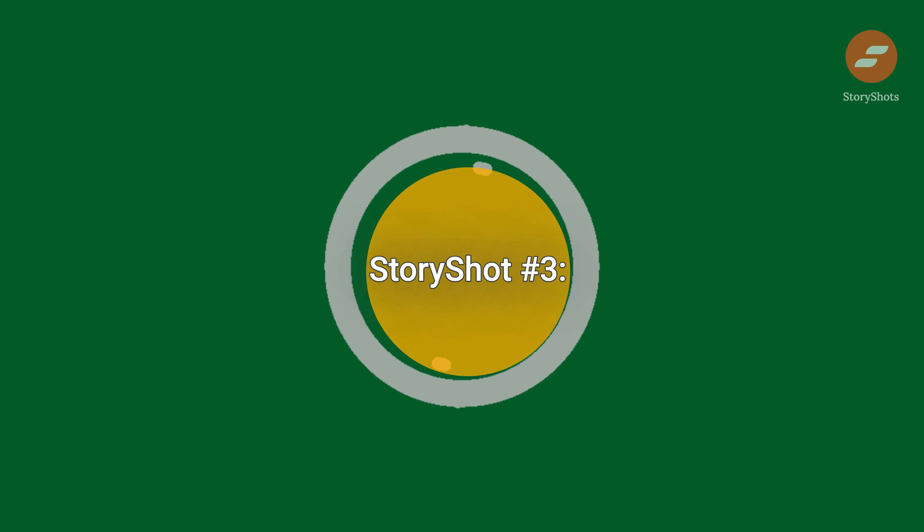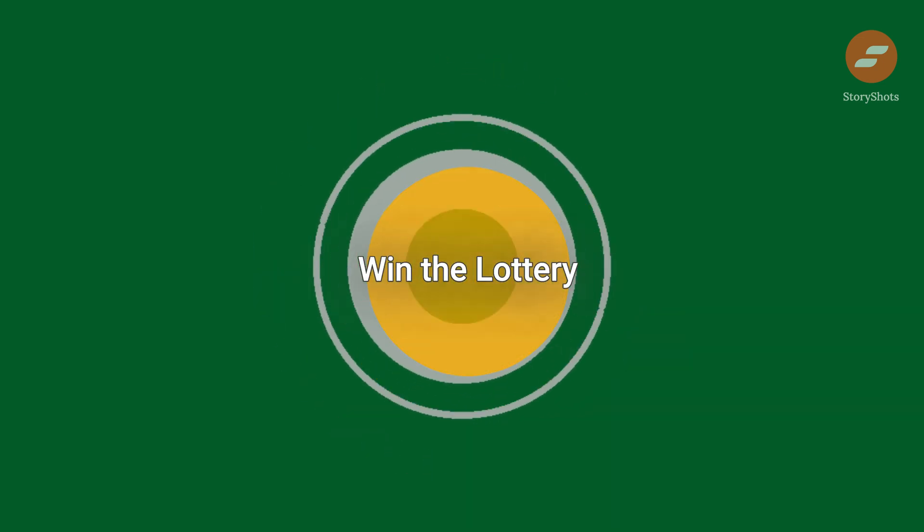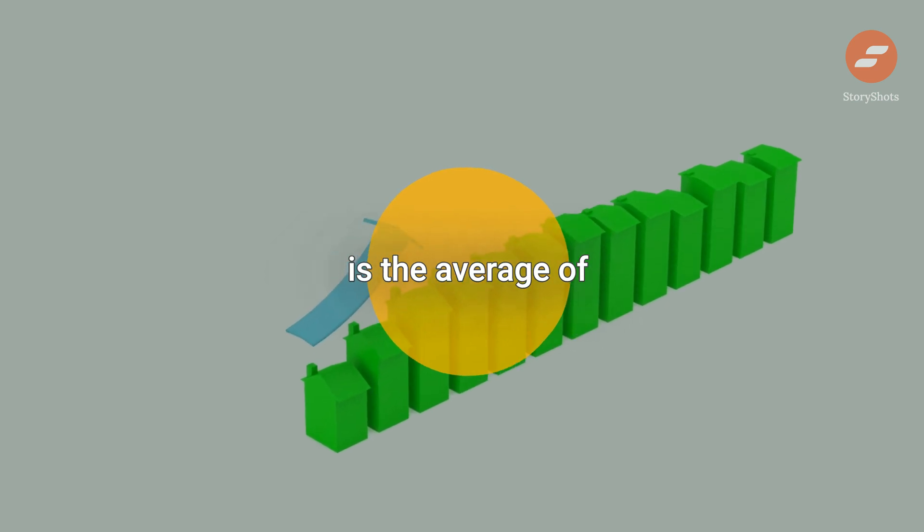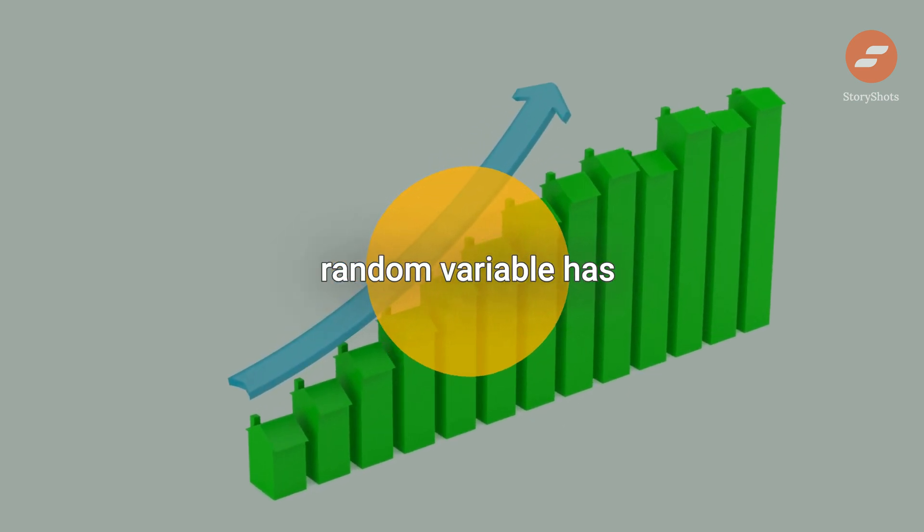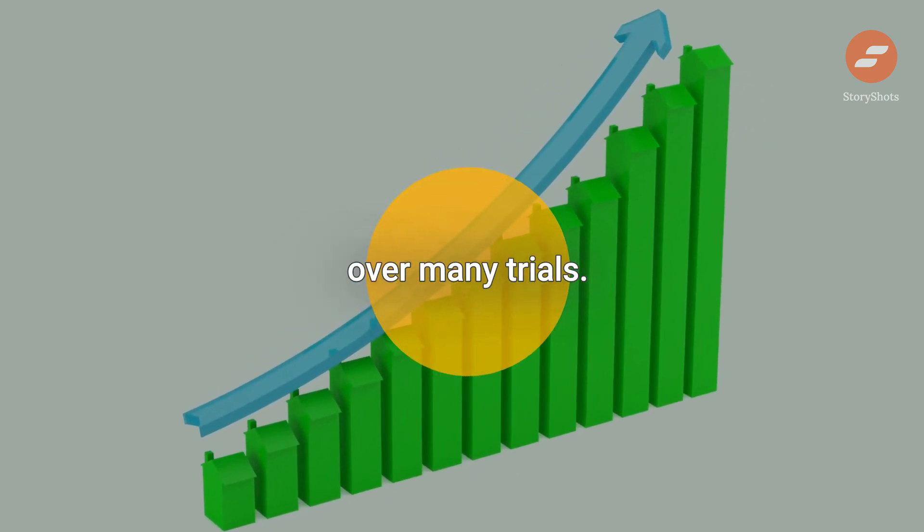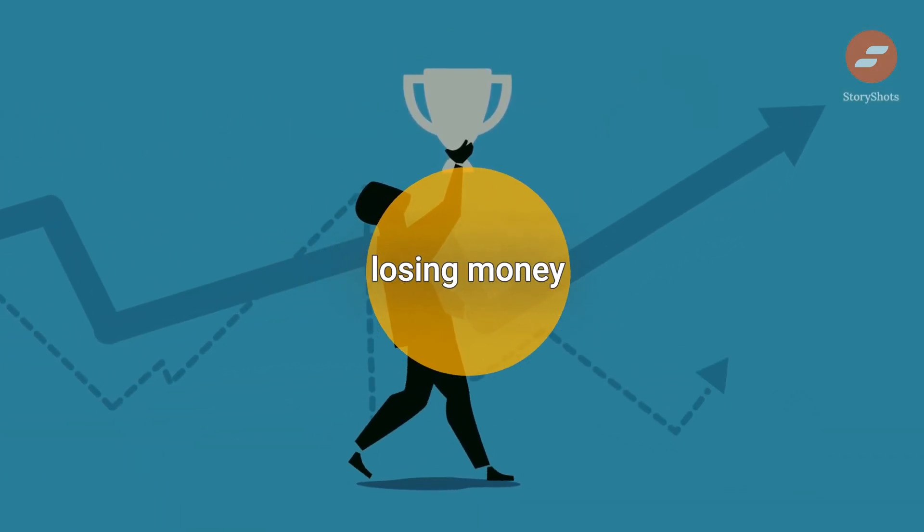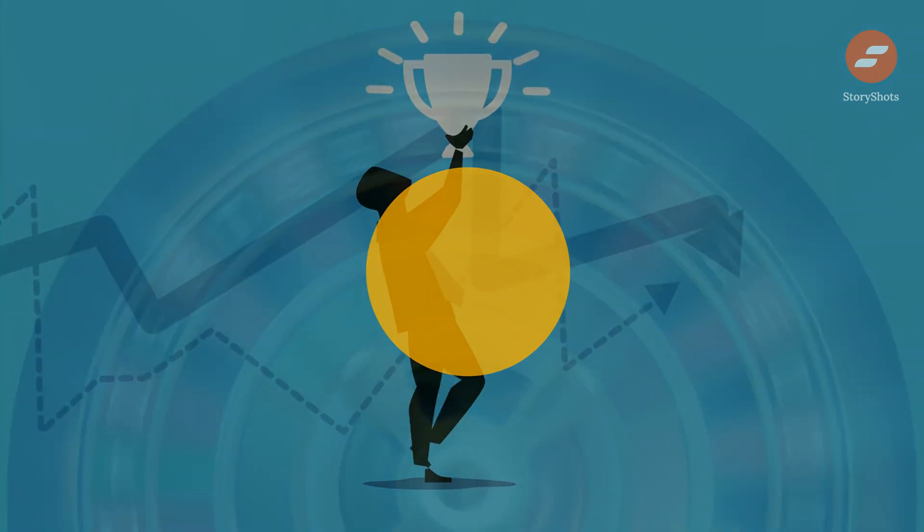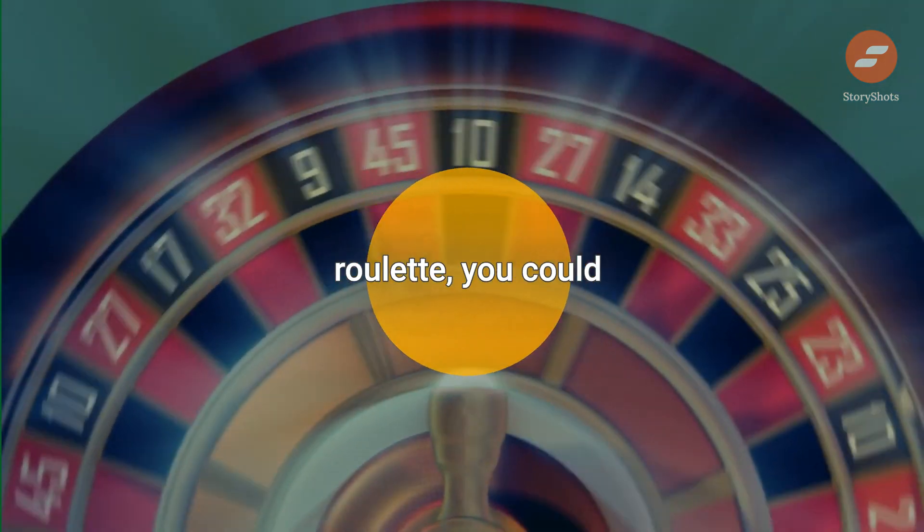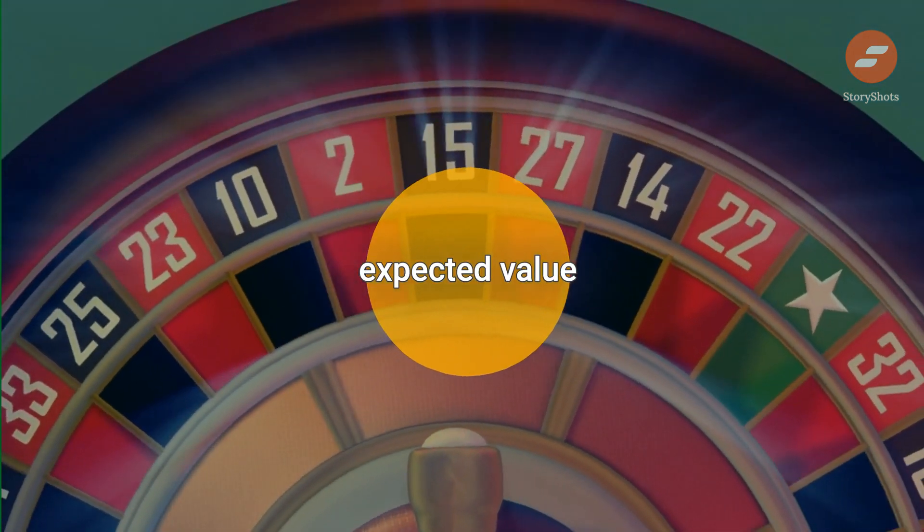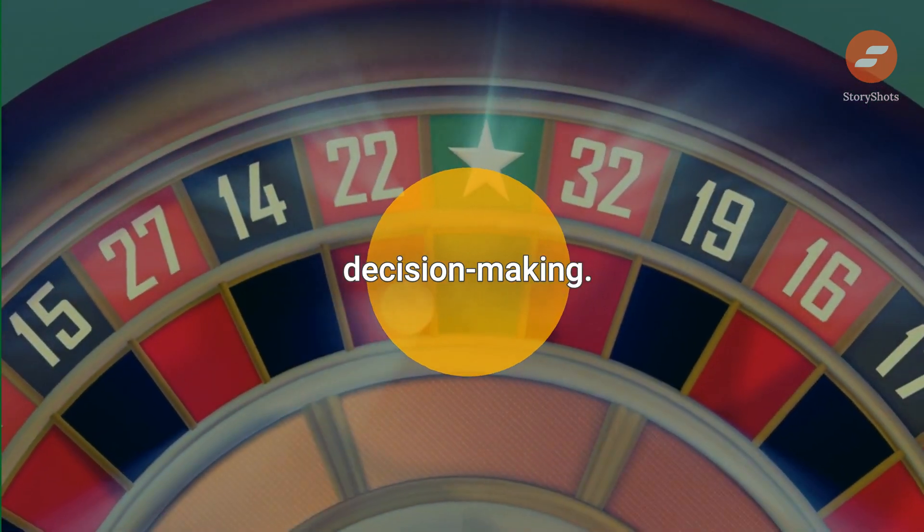Story shot number three. Math can help you win the lottery. An expected value is the average of the values that a random variable has over many trials. For example, it describes the probability of winning versus losing money in the long run. If you were to visit a casino and play roulette, you could calculate your expected value to inform your decision-making.